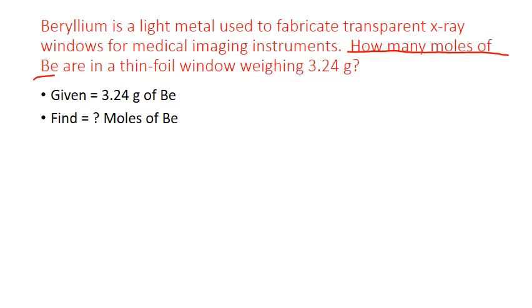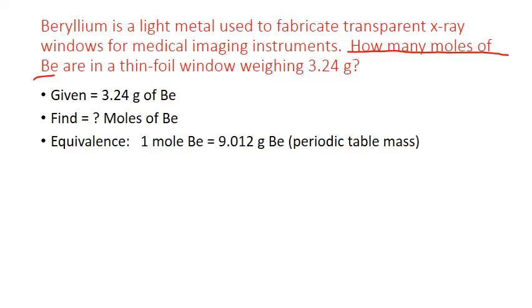Now in order to do this conversion we just need an equivalence statement that relates moles of beryllium to grams of beryllium. And we have that in terms of the periodic table mass. That's our molar mass where one mole of beryllium equals 9.012 grams of beryllium. And that 9.012 is simply the average atomic mass of beryllium on the periodic table. And now we can set up our dimensional analysis.